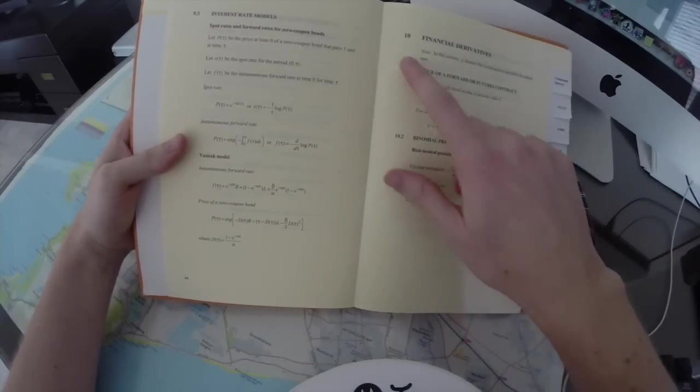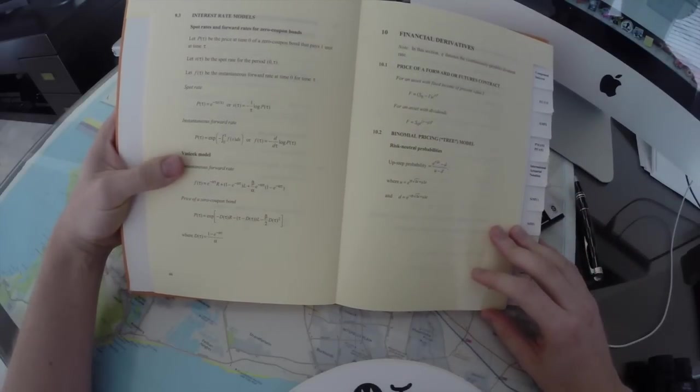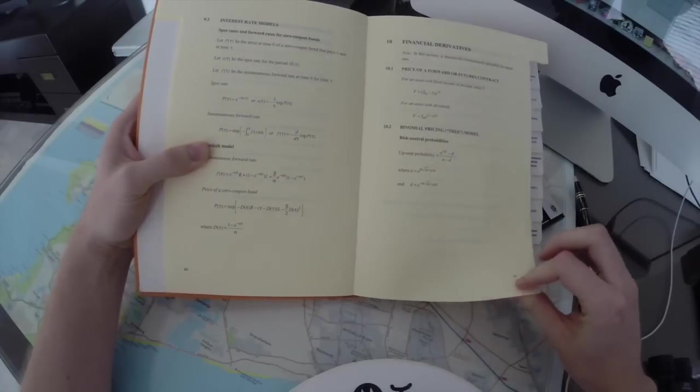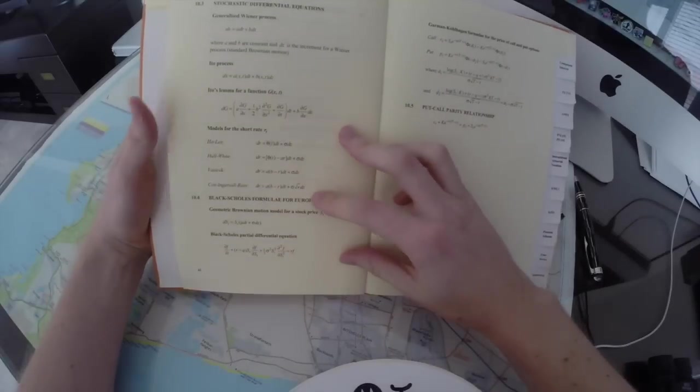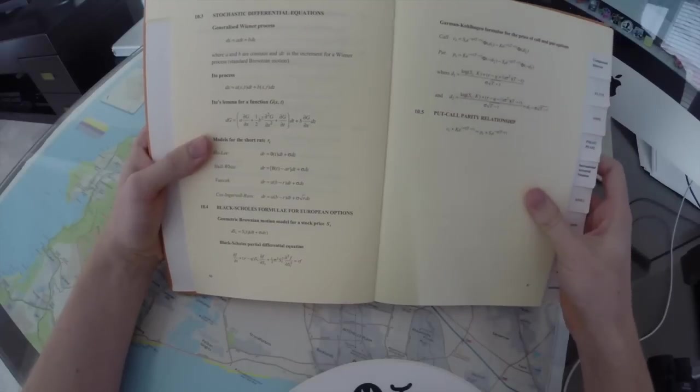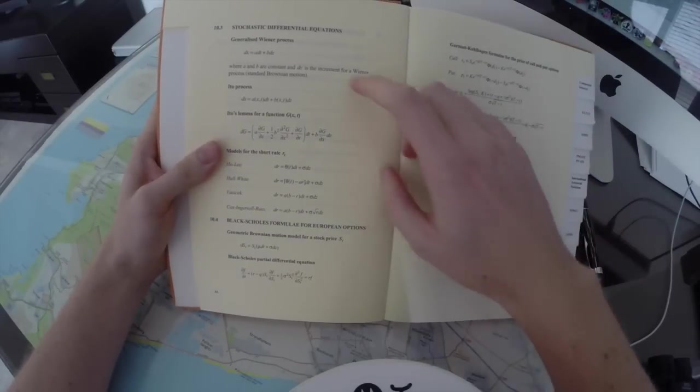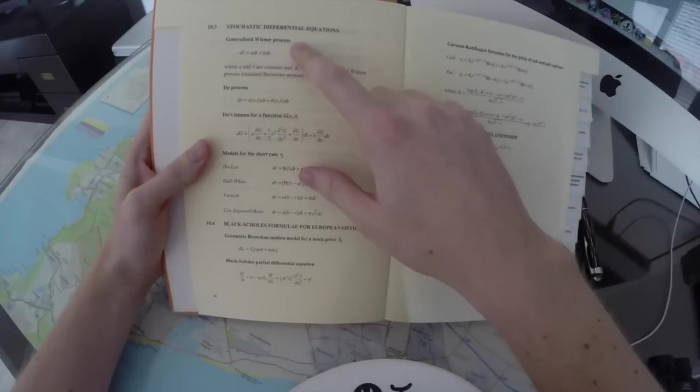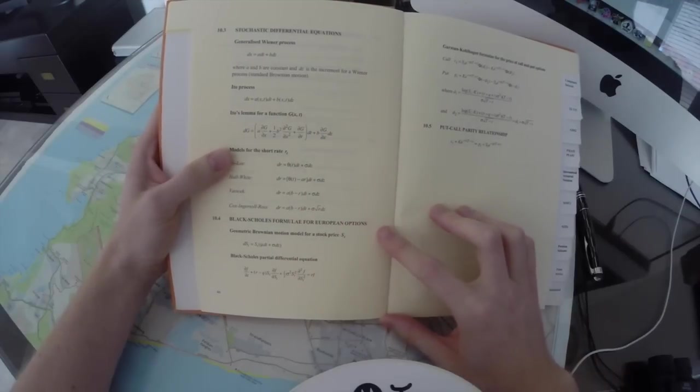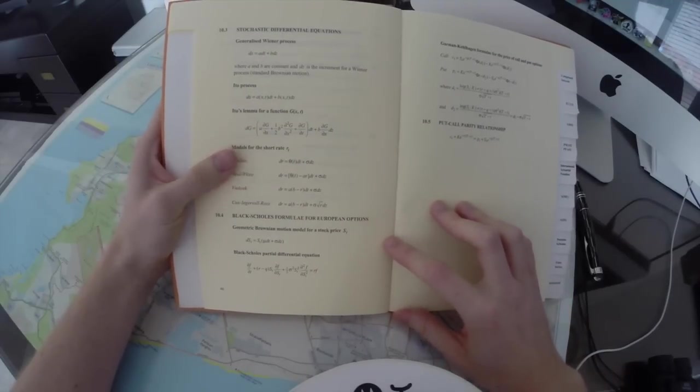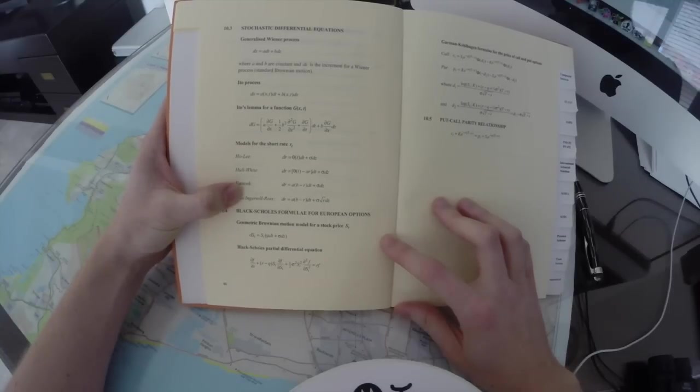Then there's finance, price of a forward or a future contract, the binomial pricing tree for risk neutral probabilities, I enjoyed doing those, they were quite fun. Stochastic differential equation, probably the hardest thing I've ever done in my life, the generalized Wiener process, but this Ito's, Ito's lemma, wow, that was quite tricky, and you can use that to model like short-term interest rates, with Hull-White, Vasicek, Cox-Ingersoll-Ross, the names here are difficult.